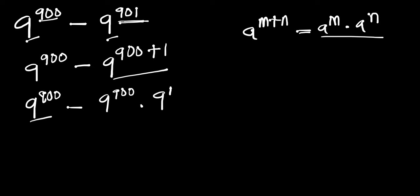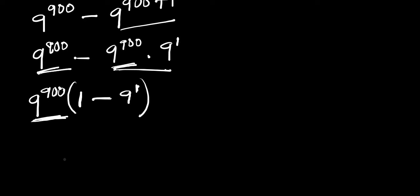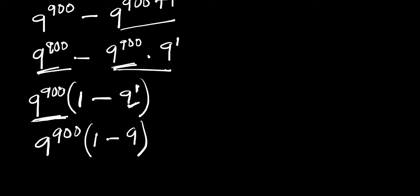Now we have 9 to the power of 900 in both terms, so we can factor that out. Bringing out 9 to the power of 900, we divide each term by it: the first term gives 1, and the second gives 9. So we have 9 to the power of 900 times 1 minus 9, which equals 9 to the power of 900 times negative 8.